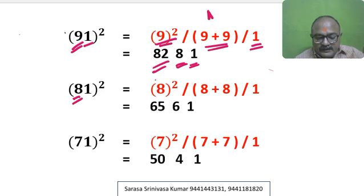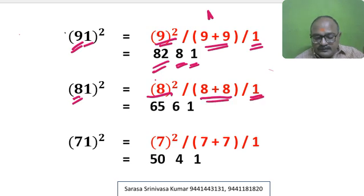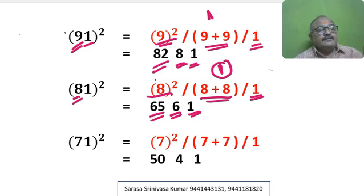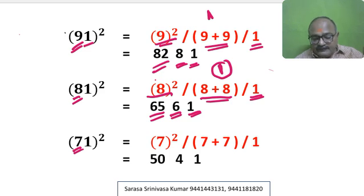81 square: 10th digit is 8. 8 square, 8 plus 8, and last 1. Write 1; 8 plus 8 is 16, so I write 1 here and this is 6. 8 square is 64; 64 plus carry forward 1 is 65. So 81 square is 6561.